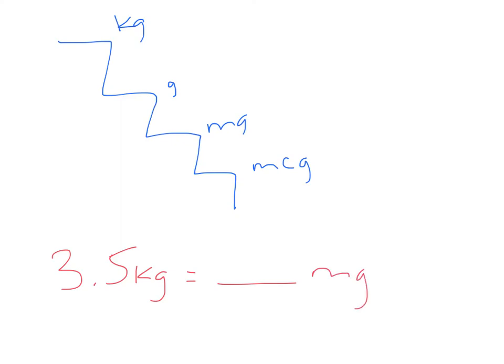If I had 3.5 kilograms and I want to know what that is in milligrams, you can see that would be down one step means times 1000, down a second step also means times 1000.